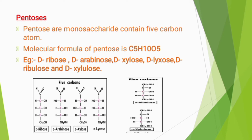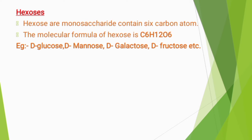Pentoses are monosaccharides containing 5 carbon atoms. The molecular formula of pentoses is C₅H₁₀O₅. Examples include D-ribose, D-arabinose, D-xylose, D-lyxose, and xylulose. Next is hexose — hexoses are monosaccharides containing 6 carbon atoms.